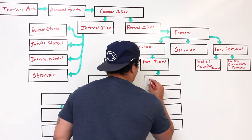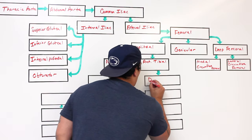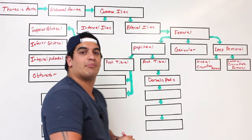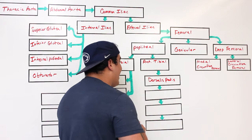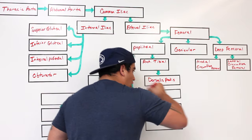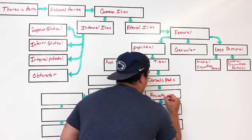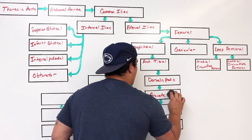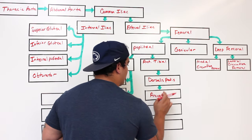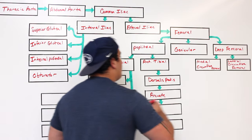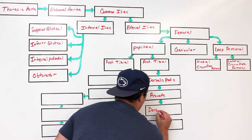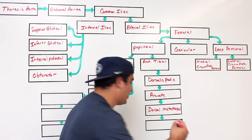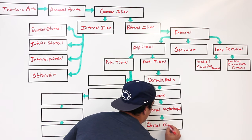The anterior tibial artery descends and becomes a structure you can actually monitor for a pulse — called the dorsalis pedis artery. The dorsalis pedis then arcs around into what's called the arcuate artery. From the arcuate, you go into the dorsal metatarsal arteries, and finally into the dorsal digital arteries supplying the toes.